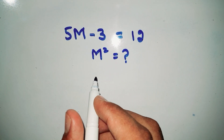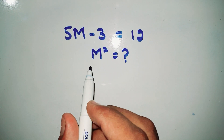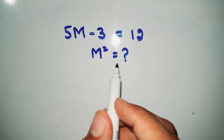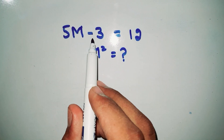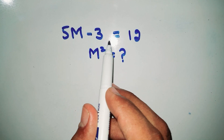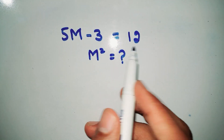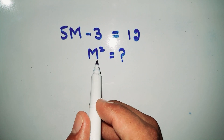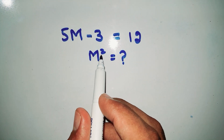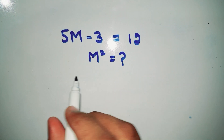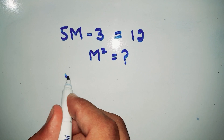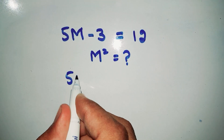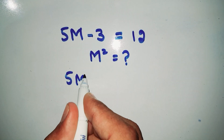Welcome back to another video. In this video we are going to solve this problem: 5m minus 3 is equal to 12. We have to find the value of m square. So first of all, here we write 5m minus 3 is equal to 12.